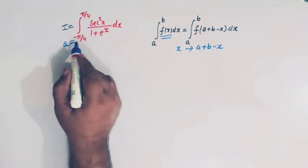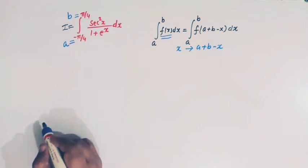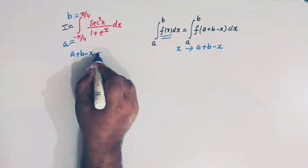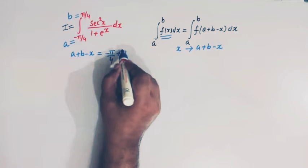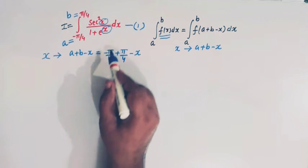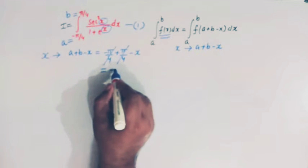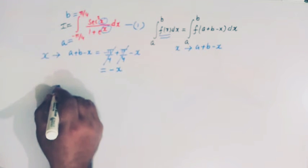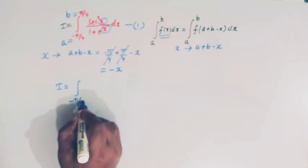If we apply this property to evaluate this integral, the value of a is minus pi by 4 and the value of b is pi by 4. So the quantity a plus b minus x is equal to minus pi by 4 plus pi by 4 minus x. Here minus pi by 4 and pi by 4 cancel, and we are left with minus x.